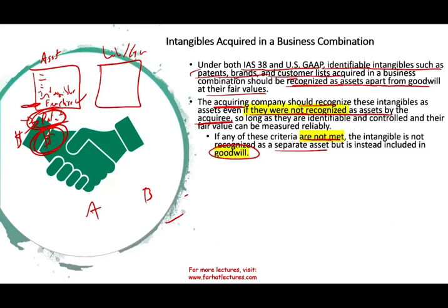If those criteria are not met, the intangible is not recognized as a separate asset but instead included in goodwill. Goodwill is value in the company that you cannot identify — you cannot identify it as a tangible or intangible asset. It's something you are paying for that's not a tangible or intangible asset; you cannot specifically identify or quantify the reason. Anything you paid above the fair market value of the identifiable tangible and intangible assets is goodwill.